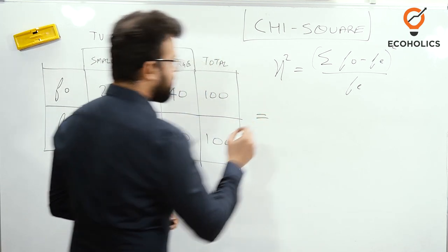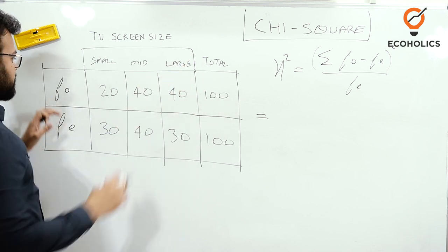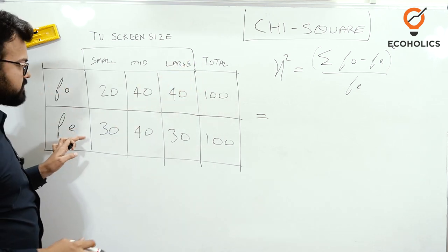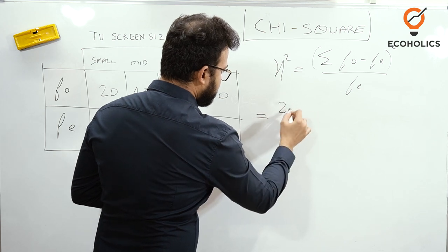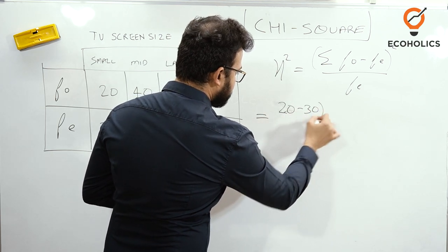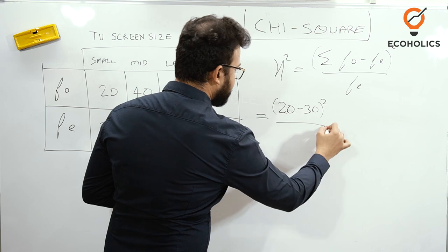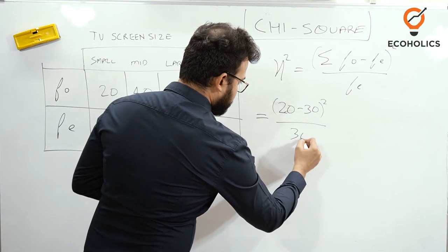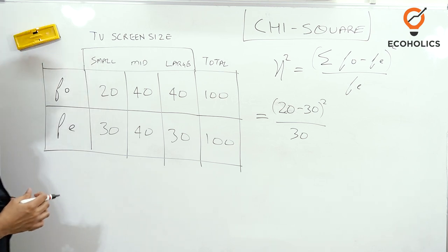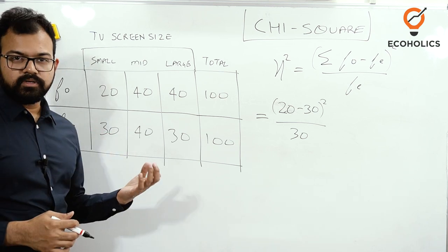We'll calculate F₀ minus Fₑ. It means 20 minus 30. So we'll write here (20 - 30)² divided by Fₑ. Fₑ for this is 30. Now on the same lines, we'll do the next.